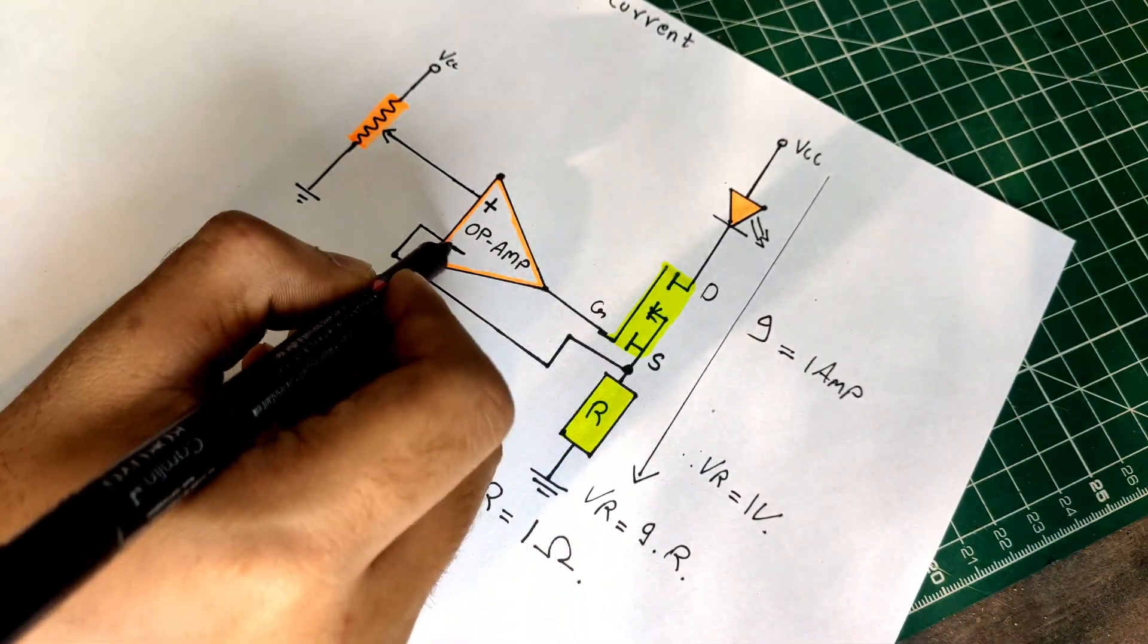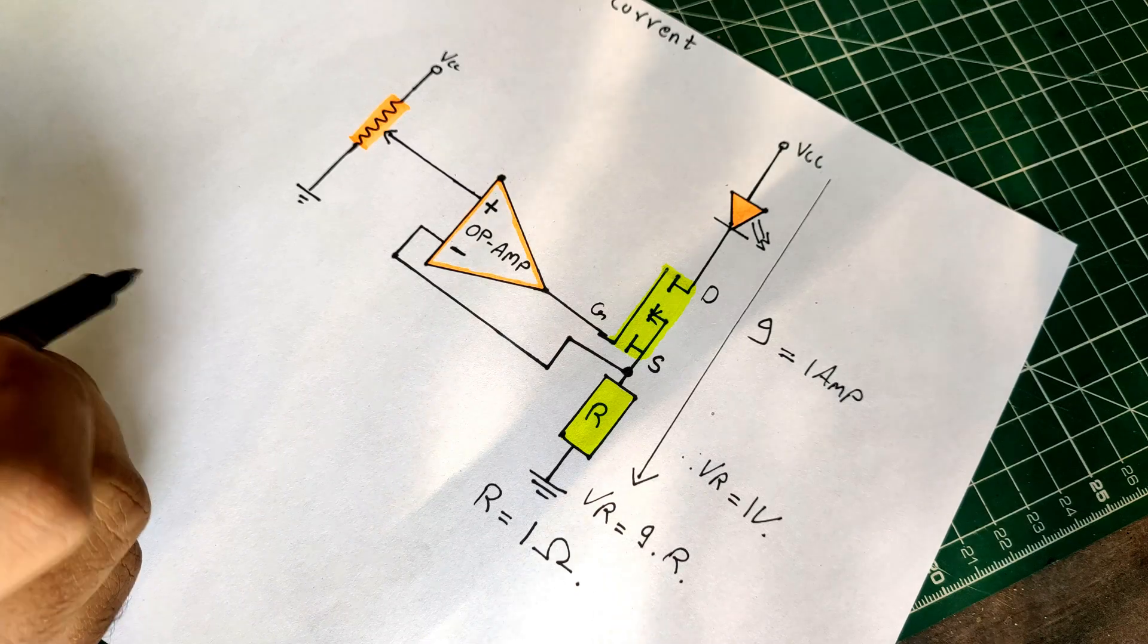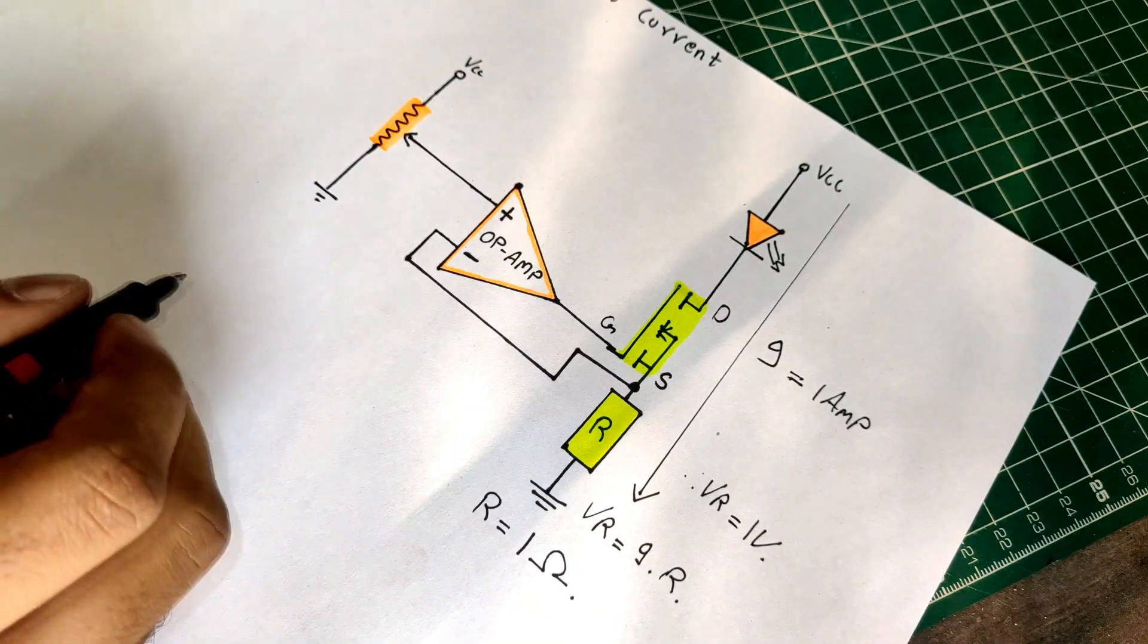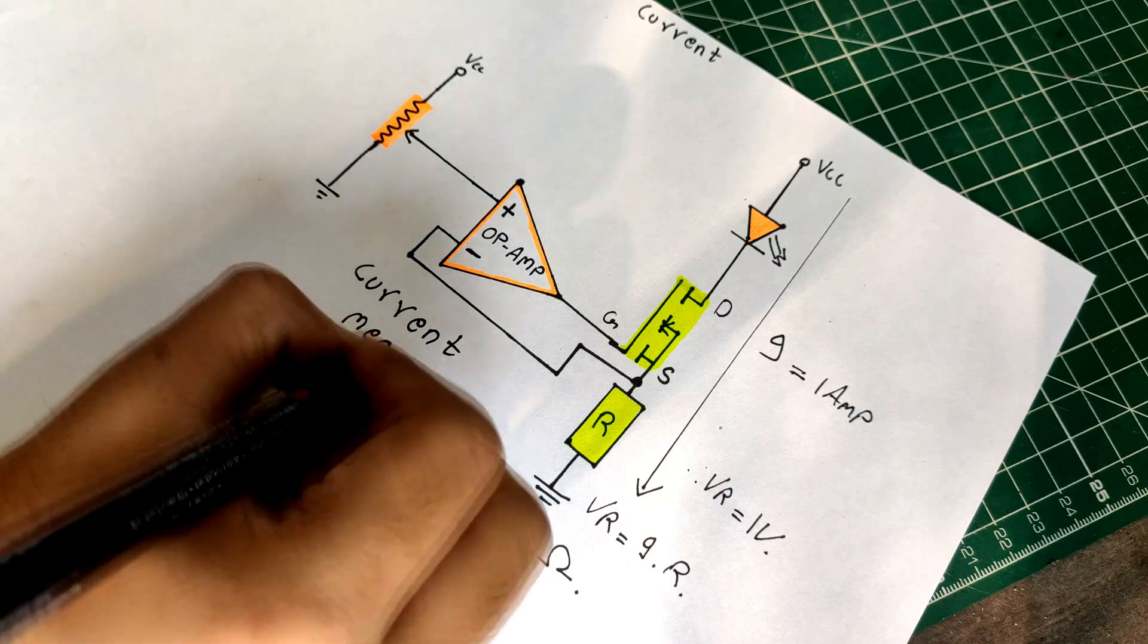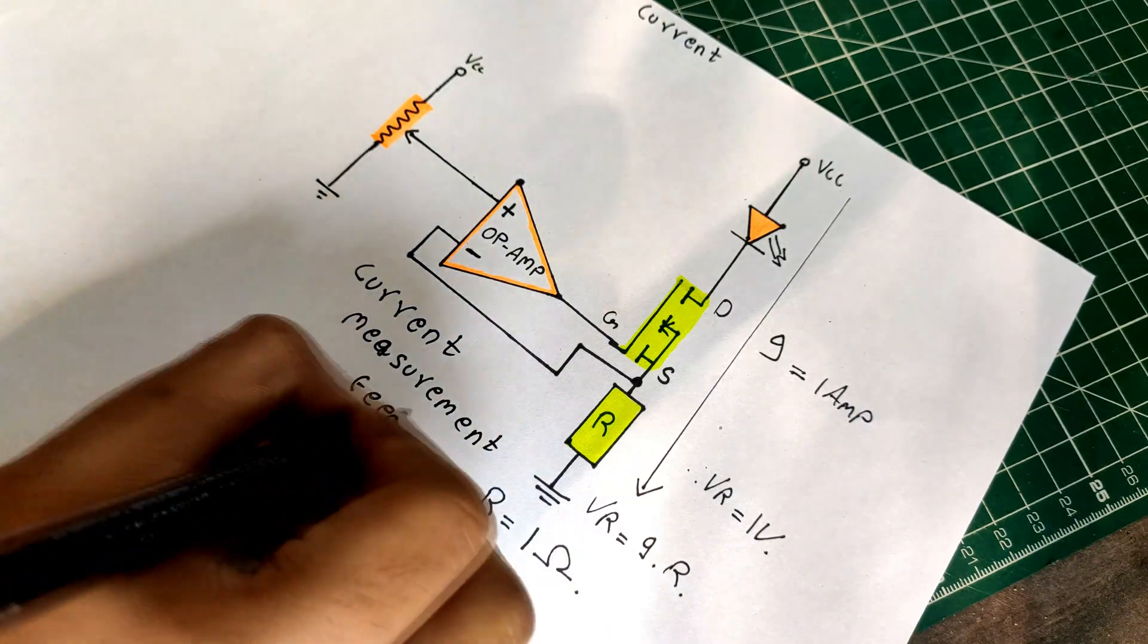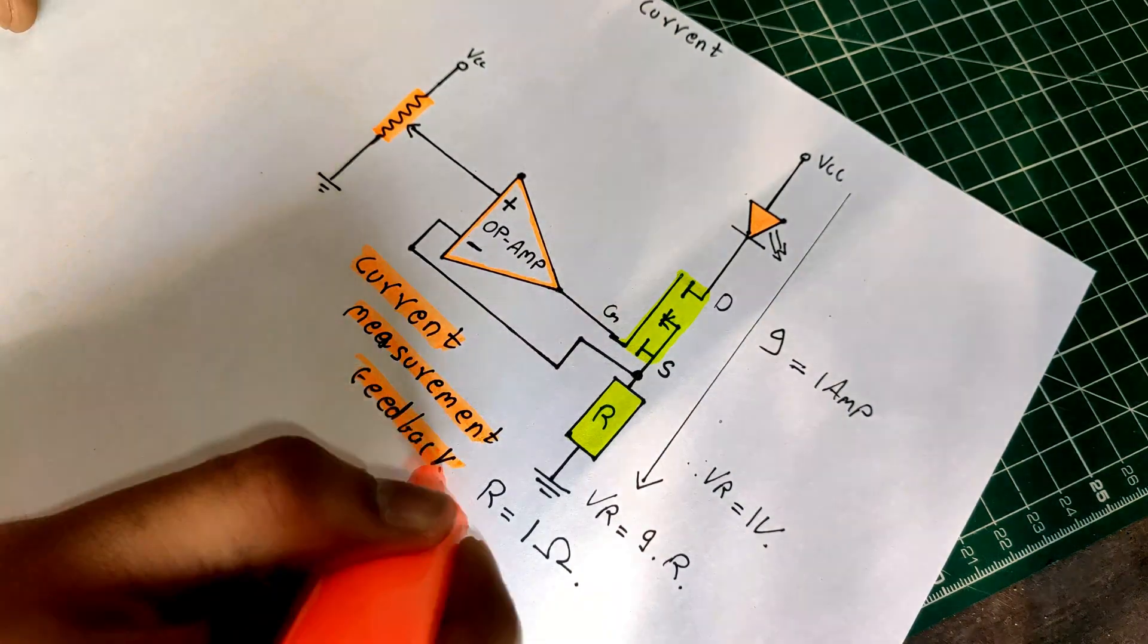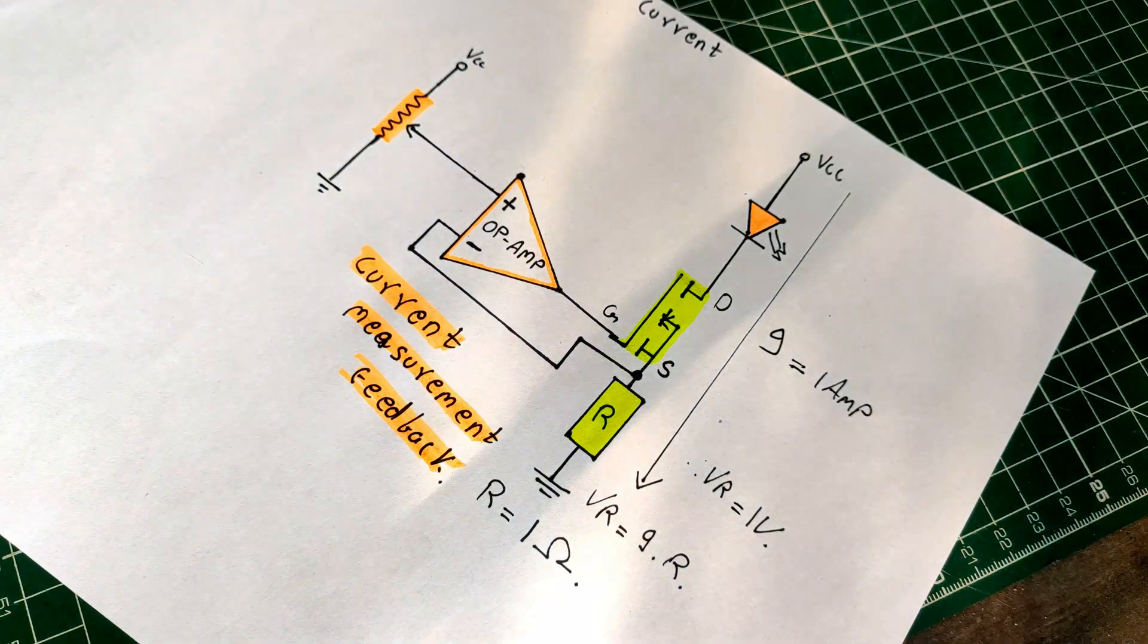So now we know the value of resistance which is 1 ohm. By applying Ohm's law, we can calculate the voltage dropped across the resistor which is then read by the op-amp on the inverting pin. We can call this as the current measurement feedback.